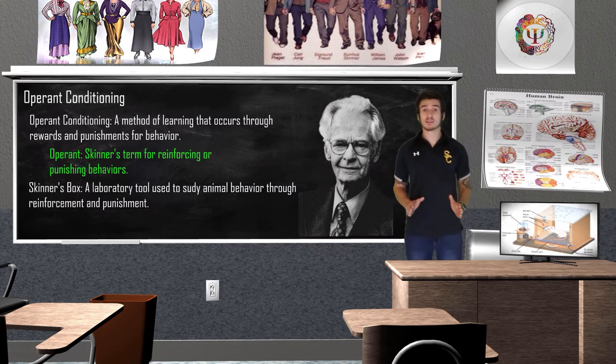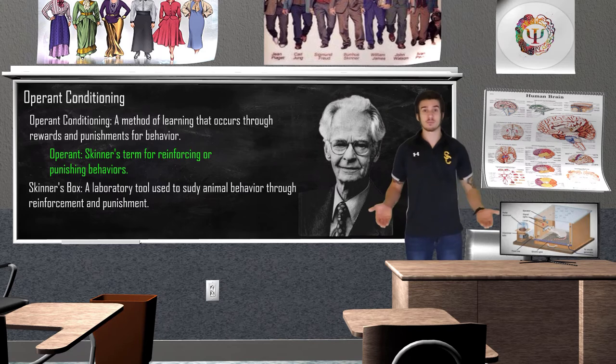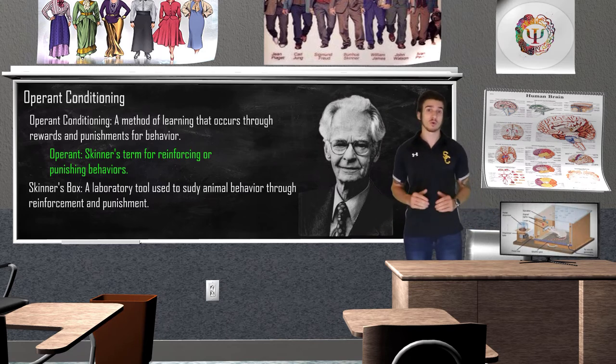When looking at the difference between the two, ask yourself: is the behavior something that the organism can control? If yes, it's operant conditioning. If no, it's classical conditioning. According to Skinner's theory on operant conditioning, there are four possible outcomes to a behavior.